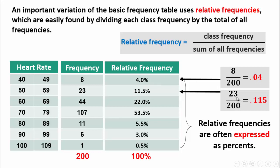The second class has a frequency of 23 divided by 200. So 23 divided by 200 is 0.115 or 11.5%.